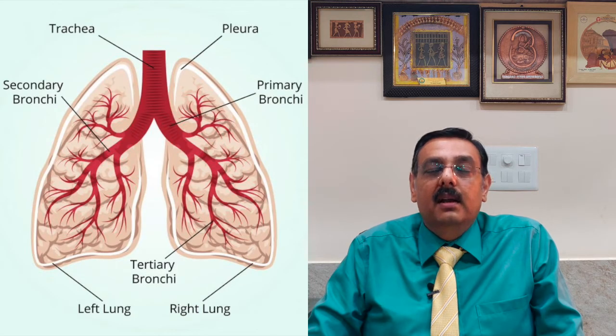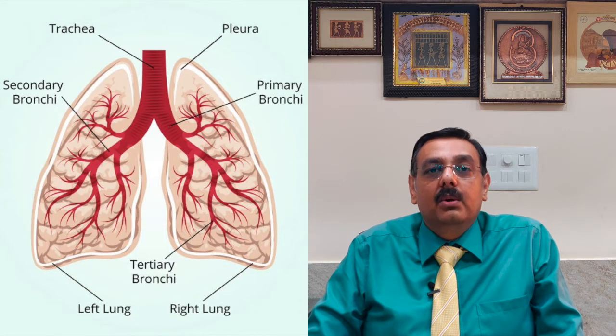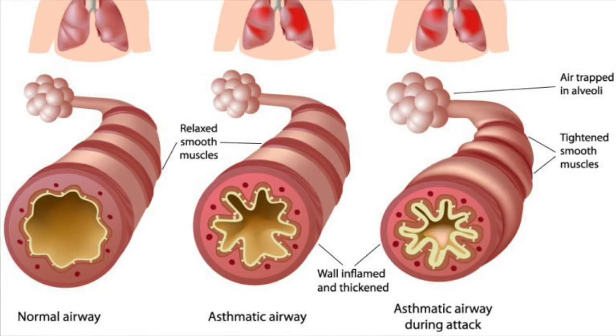Asthma is basically a problem of allergy, and this problem of allergy is related to the airways in our lungs. Our lungs have very small airways called bronchi. These bronchi, in response to an allergen, develop swelling. In addition to this swelling, they will also have some amount of mucus, and the muscles surrounding the bronchi tighten up, which is called bronchospasm.